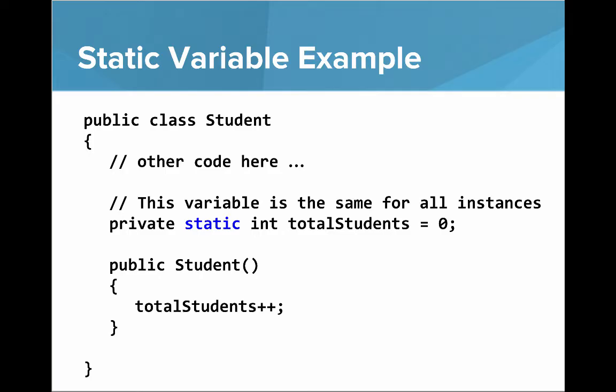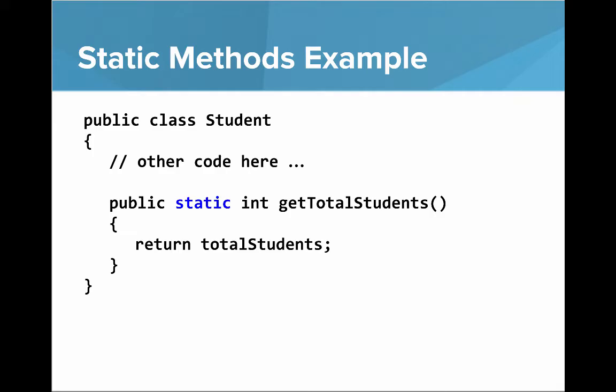The static keyword is what makes it a class variable. In our constructor, we'll also say totalStudents++, so every time we make a new student, we increment the totalStudents counter. Then we make a static method — public static int getTotalStudents — which returns the static variable for total students.